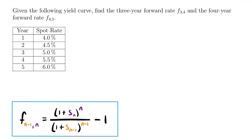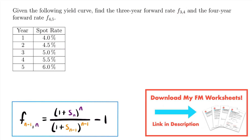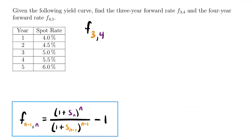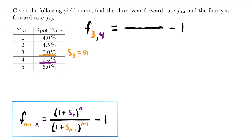Let's start by calculating f sub 3,4. Here n is four, so we use the spot rate for year four and take that accumulation factor to the power of four, divided by the accumulation factor for s sub n minus one, which is s sub three — the spot rate for year three taken to the power of three — and then subtract one. From our table, s sub three is five percent and s sub four is 5.5 percent, or in decimal form, 0.05 and 0.055.